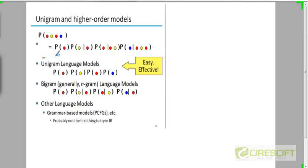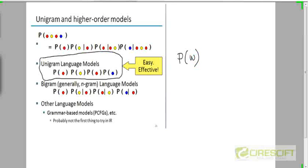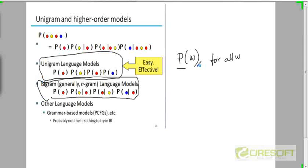This kind of model is called a unigram language model, because what we are computing is the probability of seeing word W for all W. For any particular class, when building this language model, we are computing the probability that a given word we are seeing is W. There could be a more sophisticated model where we compute the probability of seeing word W after some other word — for example, after 'the' or after 'dinner.'